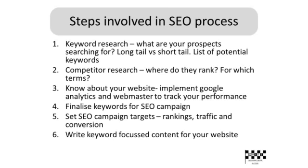What are the steps involved during the SEO process? These are the main steps. Number one is keyword research — know what your prospects are looking for. Compare long tail keywords versus short tail keywords, and then list the potential keywords that you can optimize for. List all the keywords that you want to rank for.